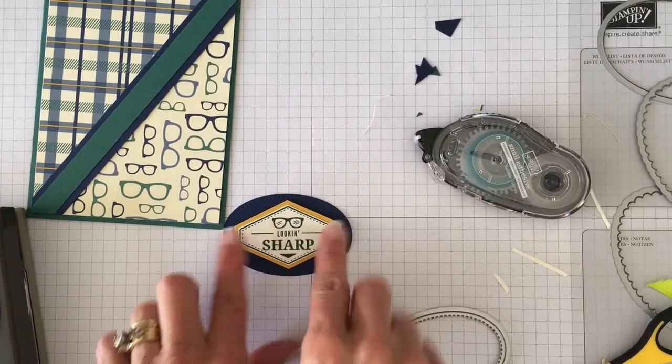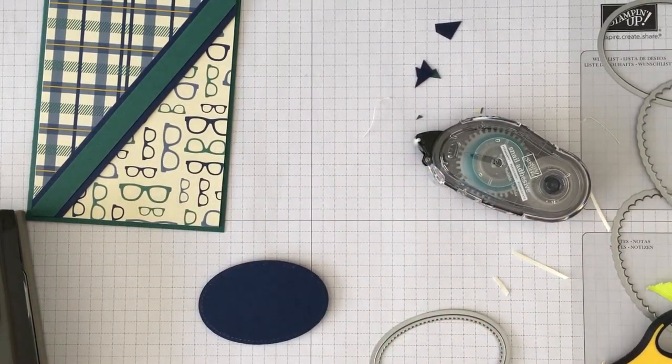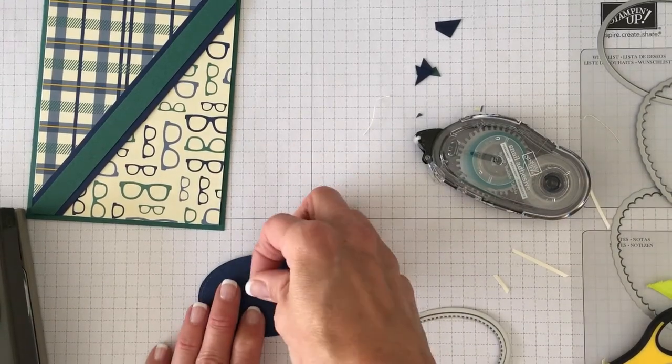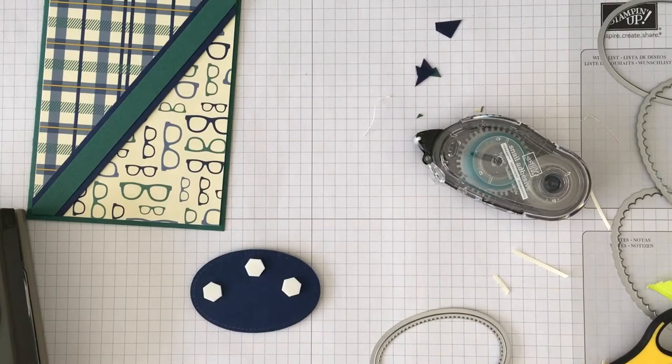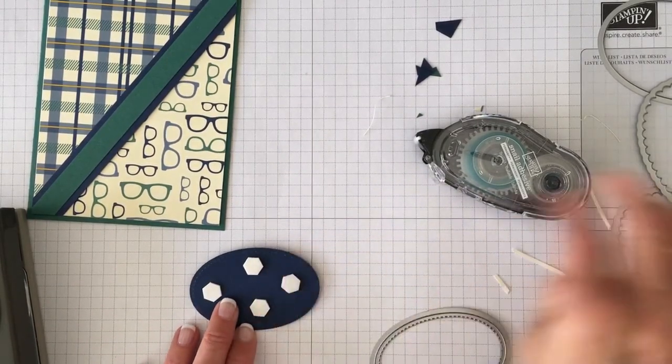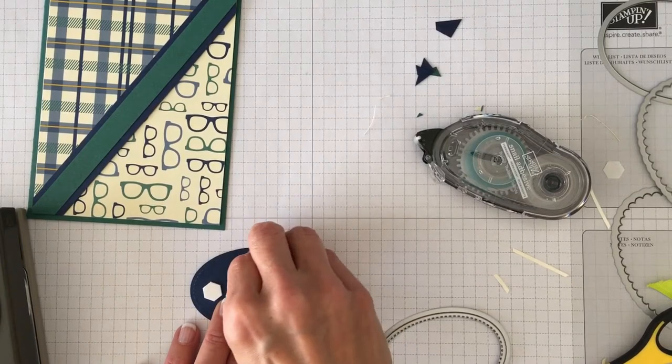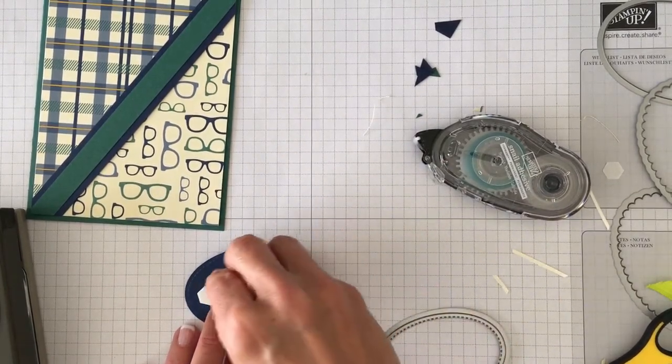And so we just are going to put that right on the middle. And I popped off the crushed curry off the navy and I'm also for some more added dimension to this card because it's essentially kind of a plain card. It's got a lot of layers but not a bunch of embellishments on it.